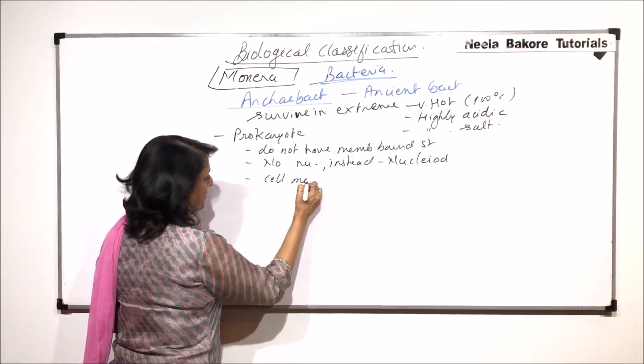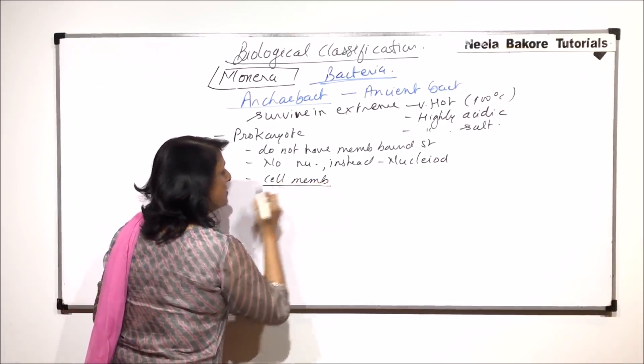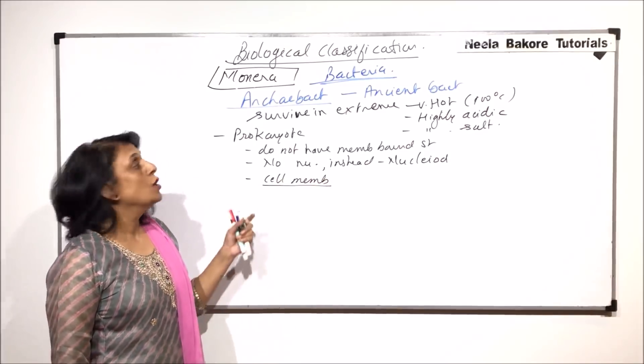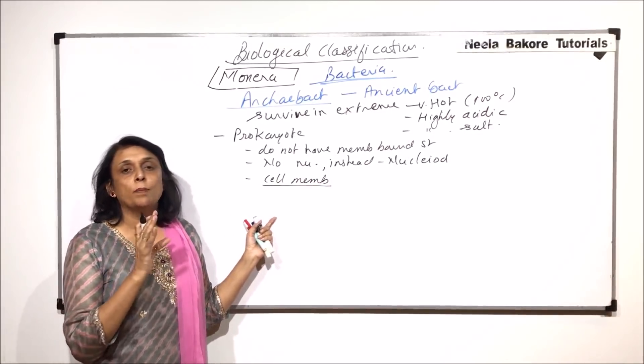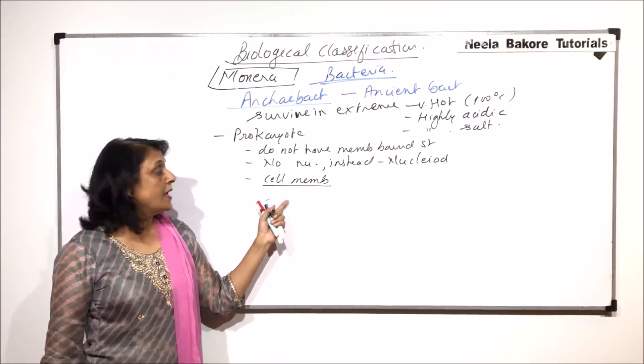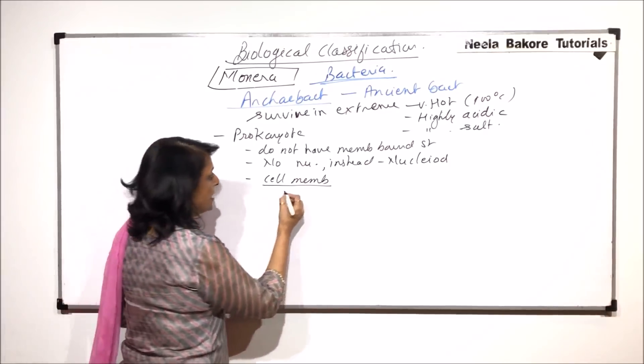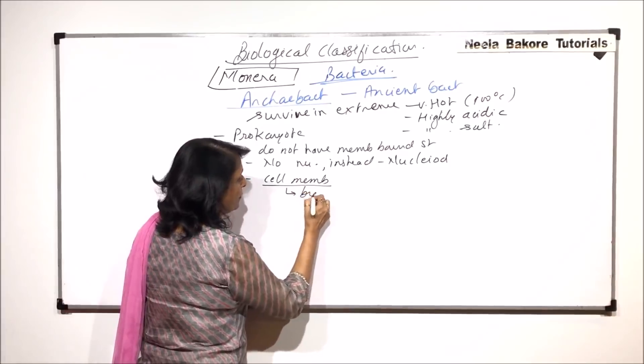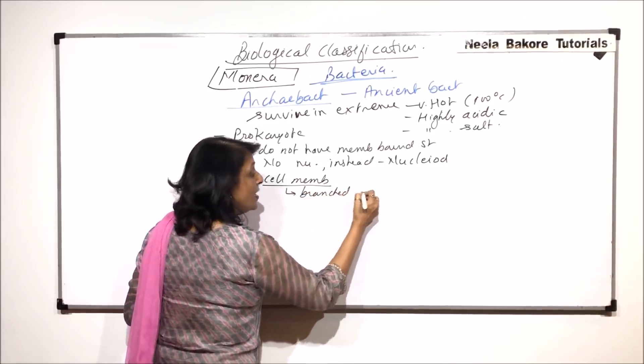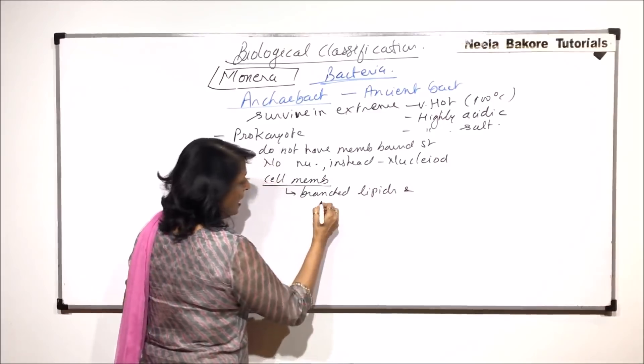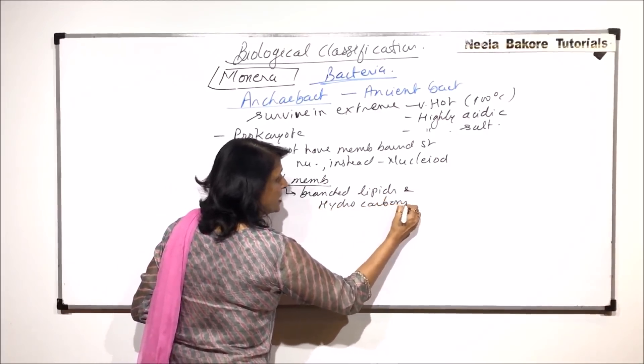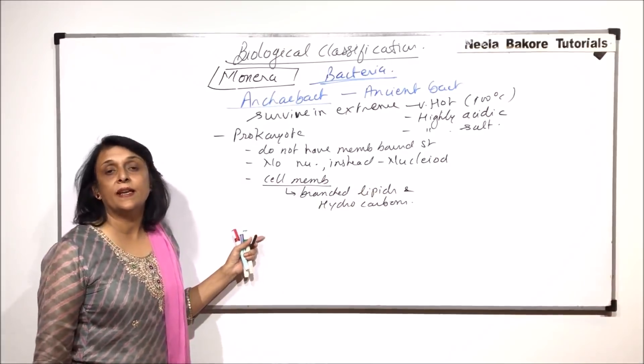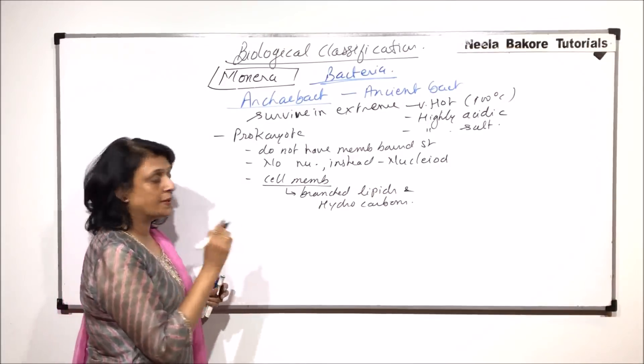The cell membrane. The cell membrane in case of normal bacteria is made up of simple protein phospholipid layer. In this case the cell membrane is made up of branched lipids and hydrocarbons. This is one reason that they are able to survive in extreme conditions.